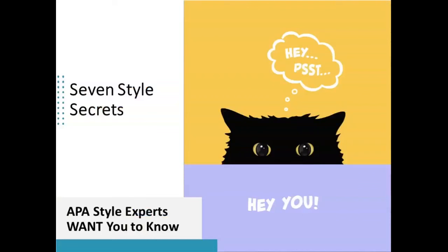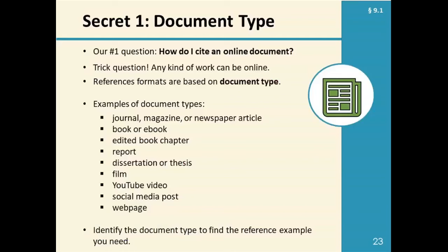Hello, everyone. Today I'm going to share seven style secrets APA style experts want you to know, including this cat. Our first secret is about document type. The number one question we receive is definitely, 'How do I cite an online document?' But it's really a trick question because any kind of work can be online, and reference formats for APA style are based on document type. Some examples are journal articles, magazine and newspaper articles, books, eBooks, reports, films, YouTube videos, web pages, and social media. You need to identify the document type and then find the reference example that you need.